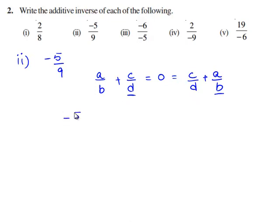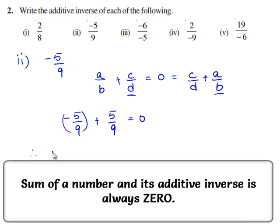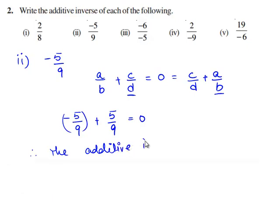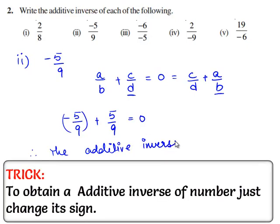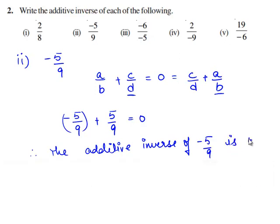The additive inverse of minus 5 by 9 is 5 by 9, because minus 5 by 9 plus 5 by 9 gives 0. Therefore, the additive inverse of minus 5 by 9 is 5 by 9.